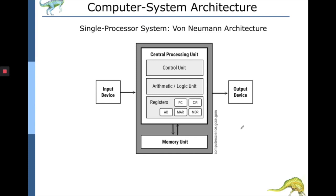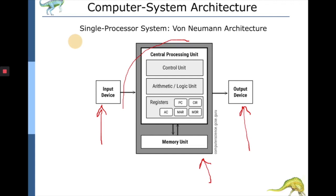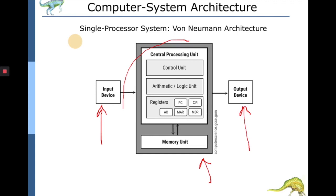In a single processor system, we have a central processing unit with a single control unit, single arithmetic unit, and a set of registers used for computing and executing instructions. In addition, it has a memory unit used to store instructions which the CPU fetches and executes, along with input and output devices. This is basically a single-core, single-CPU system.